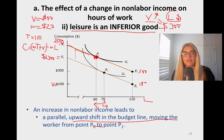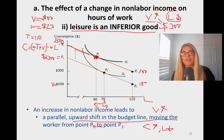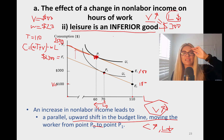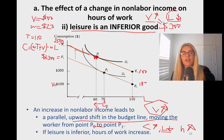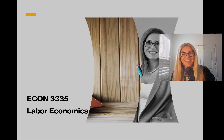Consumption goes up, of course. Leisure went down because leisure is inferior — non-labor income went up, consumption went up, leisure went down because leisure is inferior, and therefore hours of work have to go up. So if leisure is inferior, hours of work will increase, which is kind of weird.